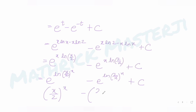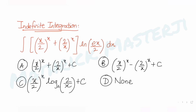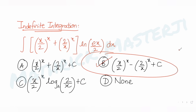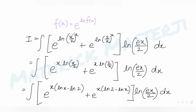So the answer is x/2 raised to x minus 2/x raised to x plus c, which matches Option B. Therefore, B is the correct answer. I hope you have understood how to solve this type of question.